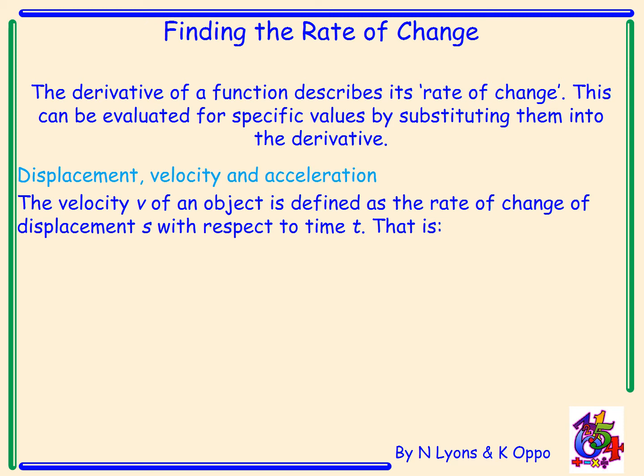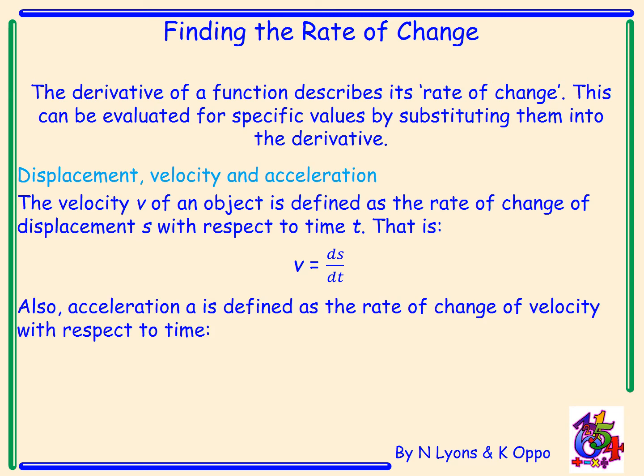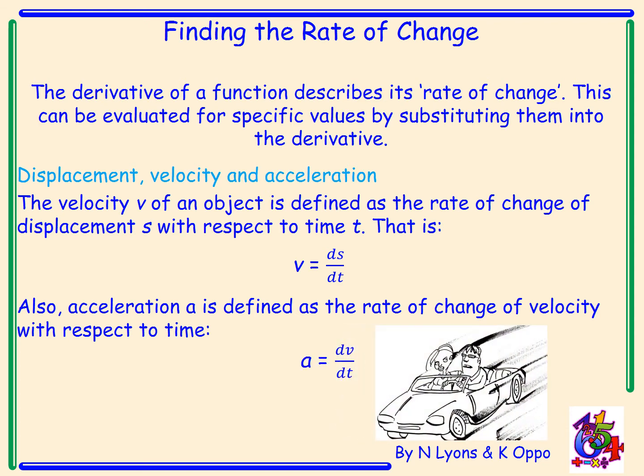Displacement, velocity, and acceleration. The velocity v of an object is defined as the rate of change of its displacement s with respect to time t. That is, velocity equals ds/dt. Also, acceleration a is defined as the rate of change of velocity with respect to time, and a = dv/dt.